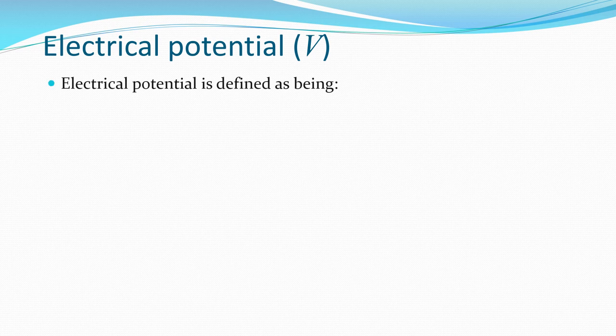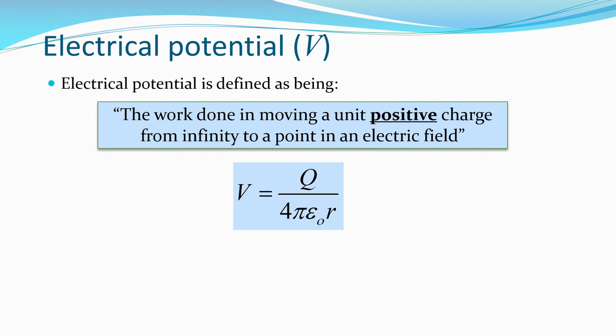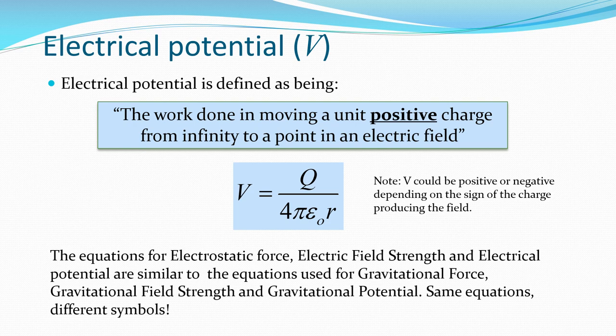Electric potential V is defined as the work done in moving a unit positive charge from infinity to a point in the electric field, which is similar to the definition for gravitational potential. V equals Q over four pi epsilon naught r, and we can get this equation from the integral of our previous equation for the force. Note V could be positive or negative depending on the size of the charge producing the field. Unlike gravitational potential, which is always negative because it's always an attractive force, here we have a positive value for a positive charge and a negative for a negative charge. The equations for electrostatic force, electric field strength, and electric potential are very similar to the equations for gravitational force, gravitational field strength, and gravitational potential — essentially the same equations but with different symbols.